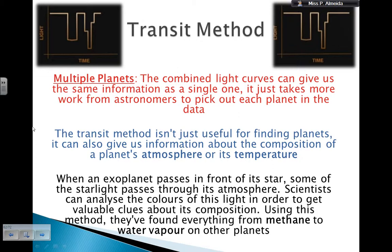And the transit method isn't just useful for finding planets. It can also give us information about the composition of the planet's atmosphere or its temperature. And this is again when I combine data, because I have a transit event and I can easily get the radius from what is the steepness of my curve when I get the transit event, then and I know how massive the planet can be by looking at the dip, then I can look at the density because density is mass over volume.